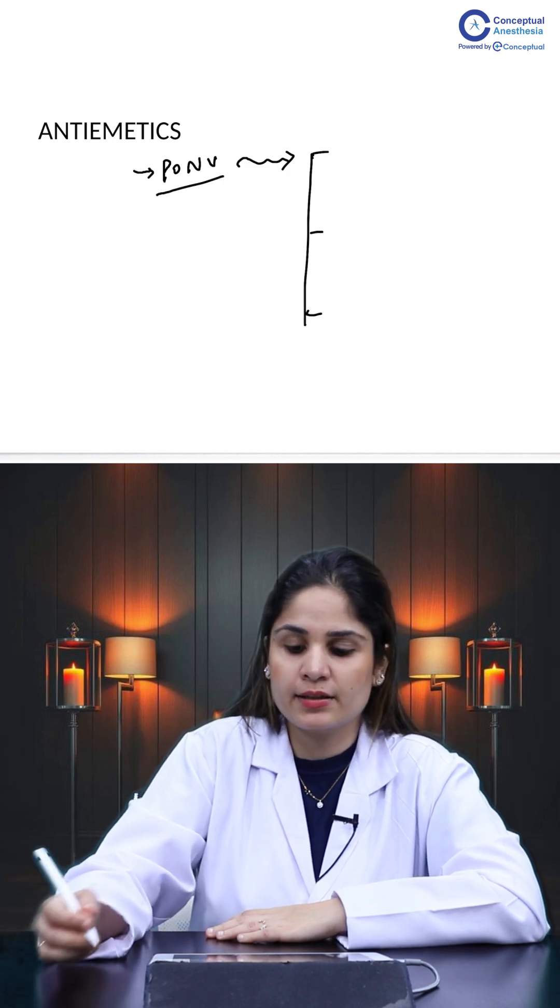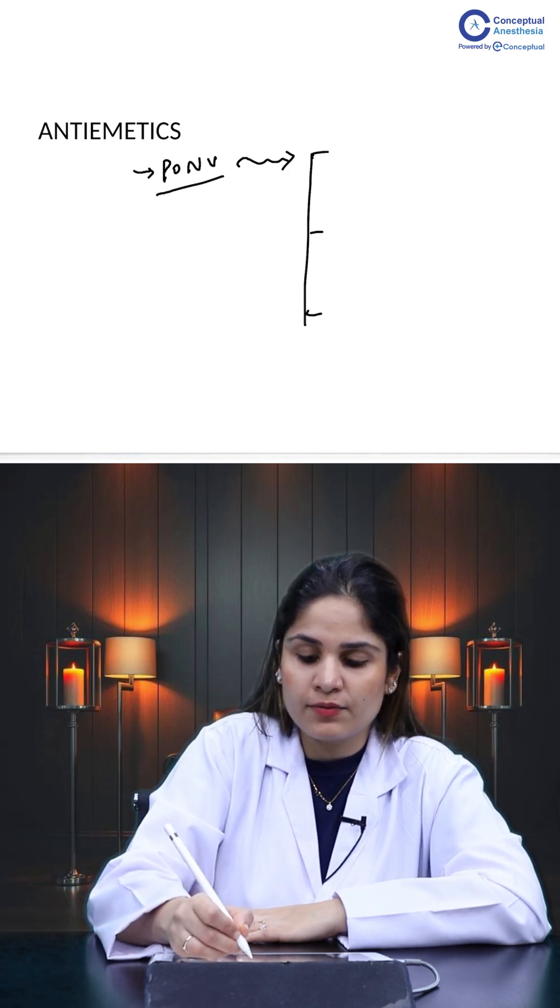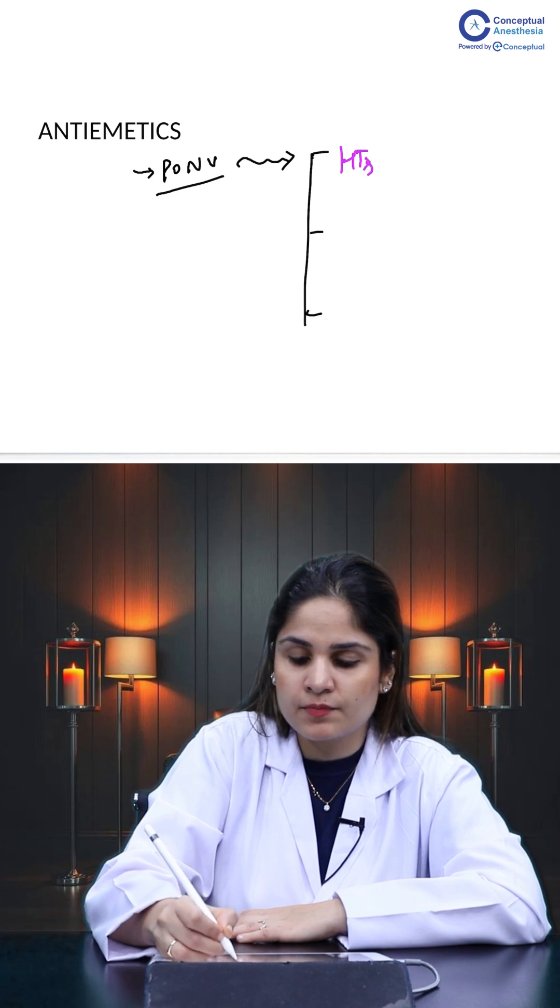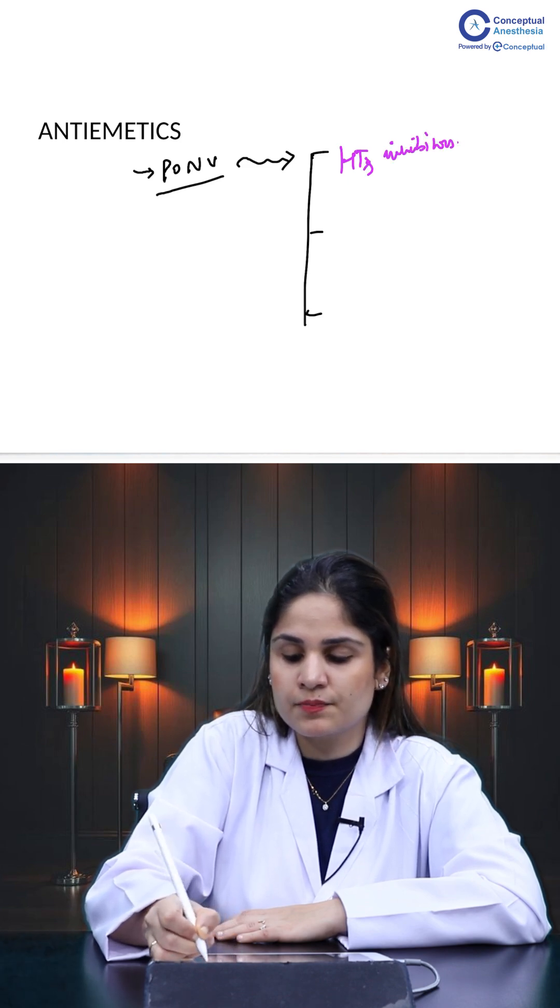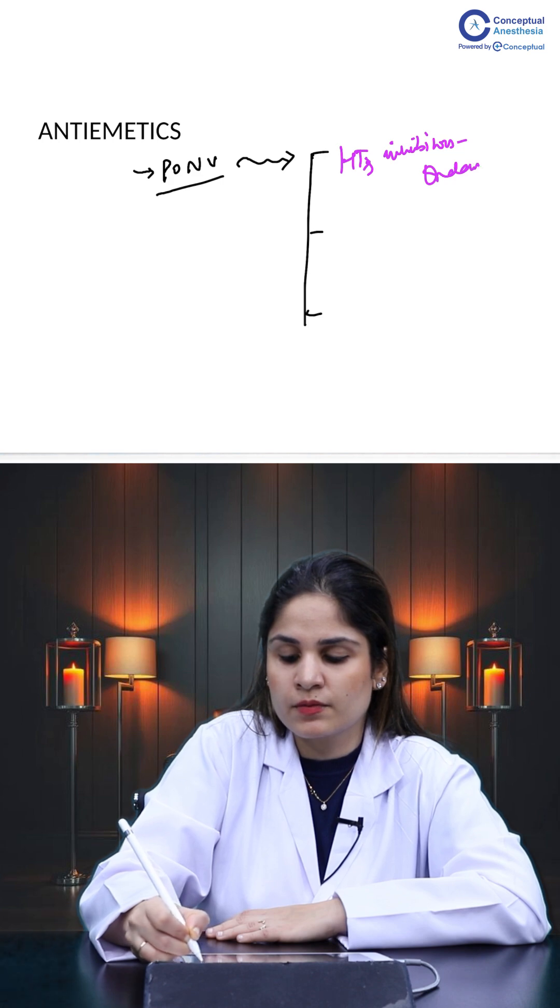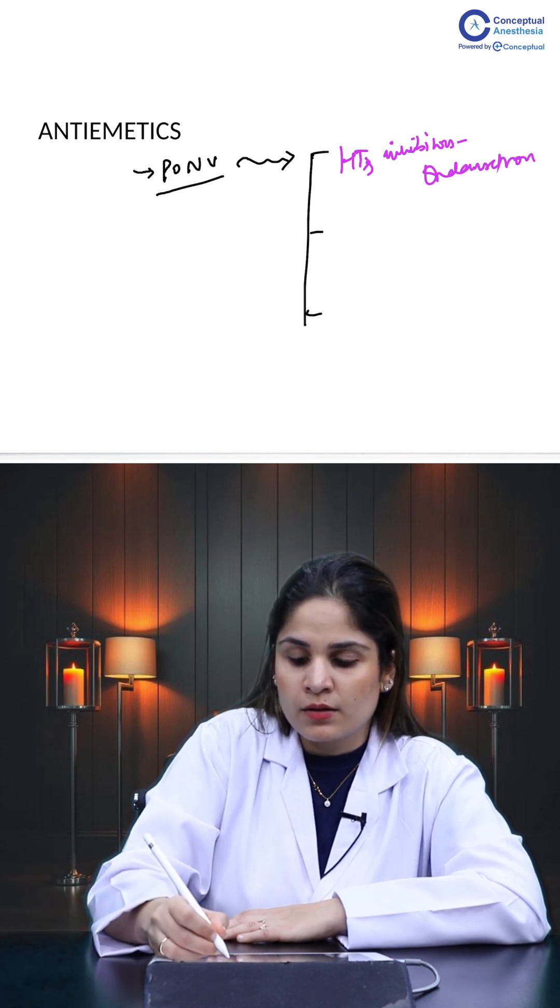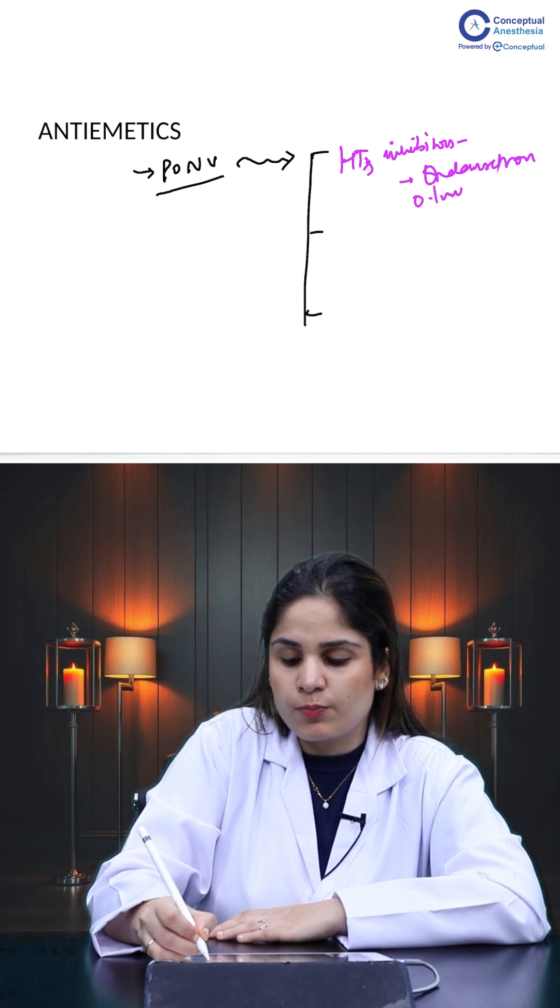What is the triple anti-emetic regimen? First is we give 5-HT3 inhibitors and what are those drugs? You have ondansetron, one of the most powerful anti-emetics that is available now. Ondansetron is given in the dose of 0.1 mg per kg thrice a day.